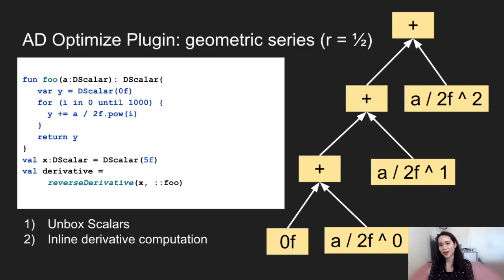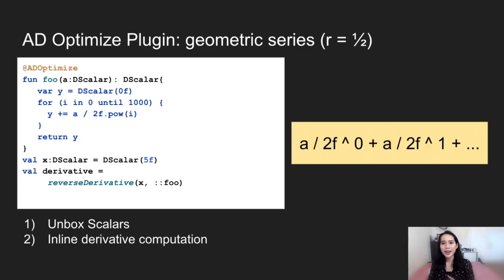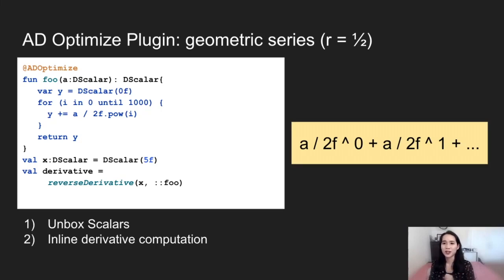So how can we do better? With the ADOptimize plugin, we can unbox scalars and inline derivative values in order to drastically reduce the number of objects that we create. For this example, this results in the creation of just one single object for the derivative computation.